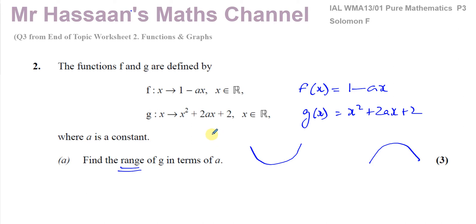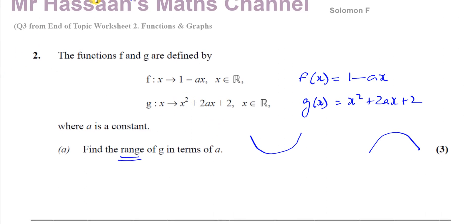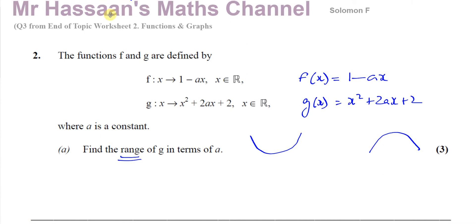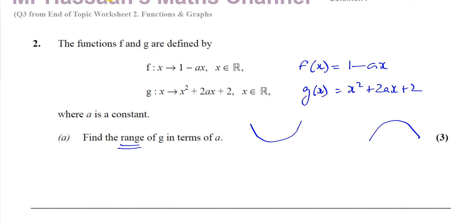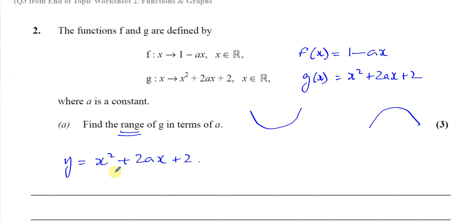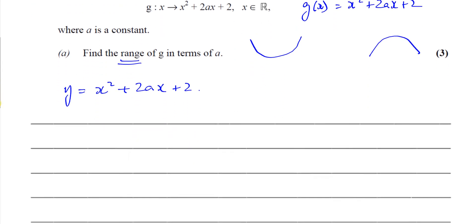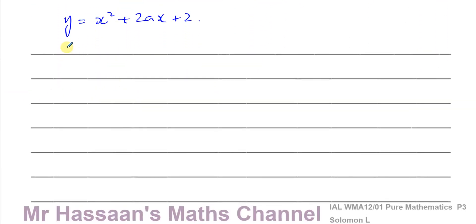In order to find the minimum point of a quadratic function, we need to complete the square. So let me write it as y equals x squared plus 2ax plus 2. The domain here is all real numbers, so the range depends on the vertex. To find the vertex we complete the square, and since the coefficient of x squared is already 1, I don't need to modify anything.